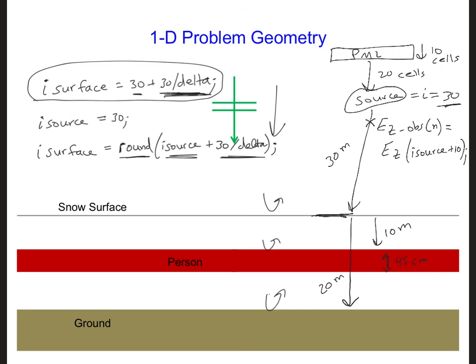The last thing we need to do is decide what to set imax equal to. As we decide what to set imax equal to, we also need to add a PML absorbing material on this side of the grid, or if not how do we decide what to set imax equal to.